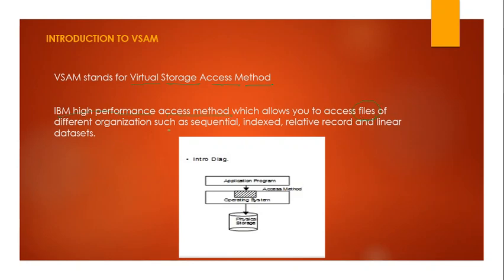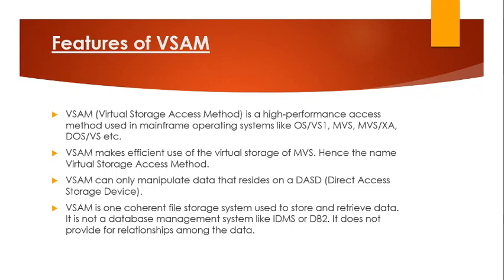VSAM supports files of different organization types, like sequential files, indexed, relative record, and linear data sets. The access method acts as an interface between your application program — for example, a COBOL program — and the physical storage, where records in a file reside. Through the access method, you can access records available on the physical storage device.